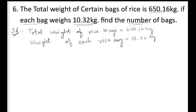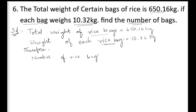To find out the number of bags, if we have the value of one thing and the total of all things, we divide the total by that one thing to get the number of bags. Therefore, number of rice bags equals 650.16 kg divided by 10.32 kg.